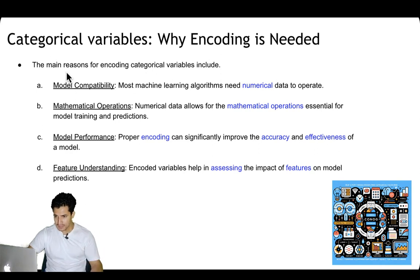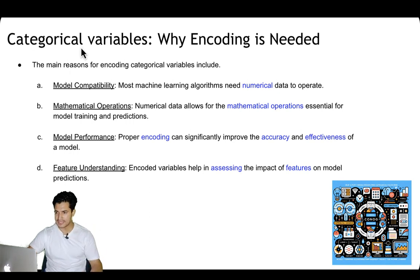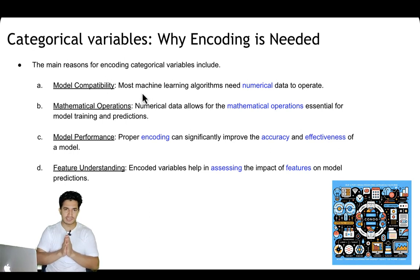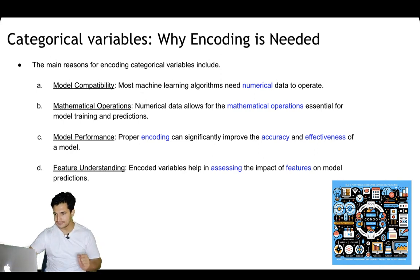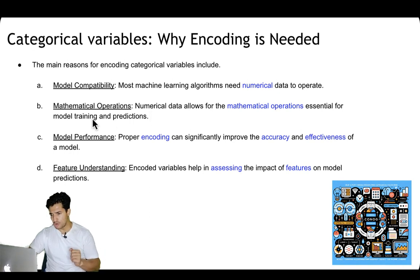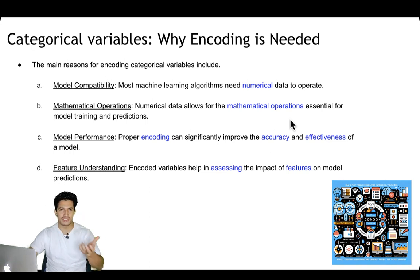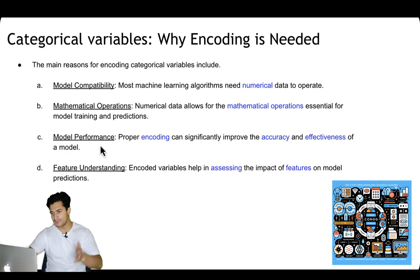Next, why is any type of encoding or transformation needed for these categorical variables? The main reason is model compatibility — most machine learning algorithms need numerical data to operate, but categories are strings. Similarly, model training and predictions perform mathematical operations, and for mathematical operations you need numbers. That's why you need to transform categories into numbers.